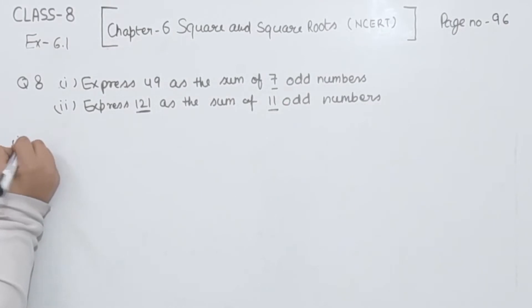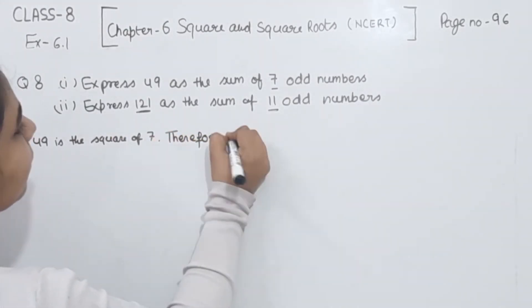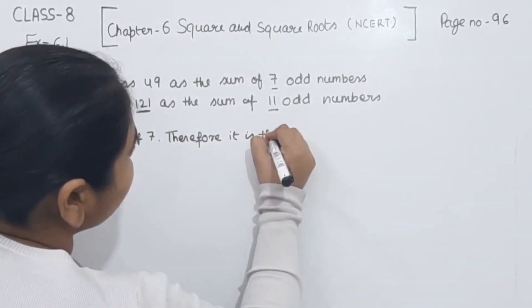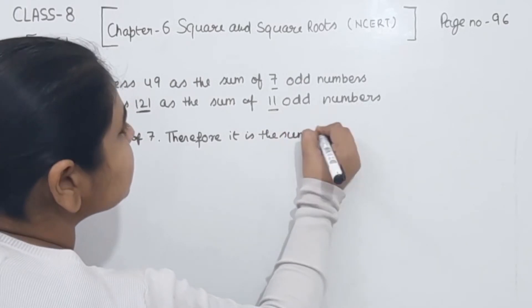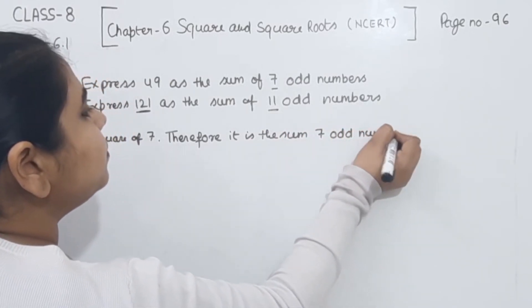First of all, we are going to start with the first one. We have the number 49, and 49 is the square of 7. Therefore, it is the sum of 7 odd numbers.